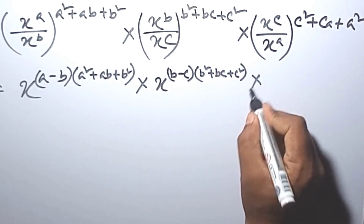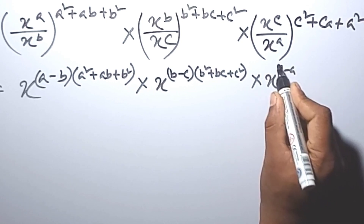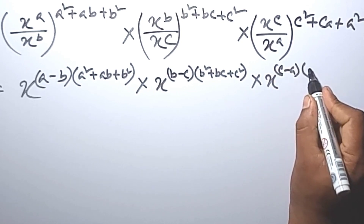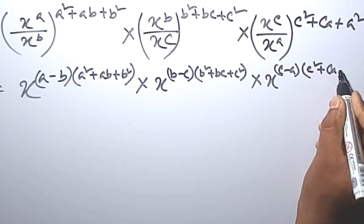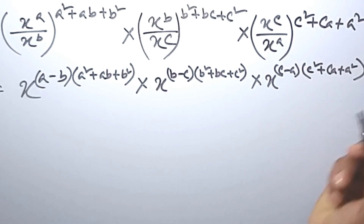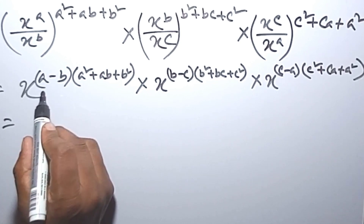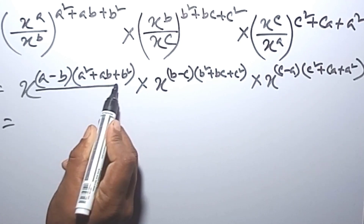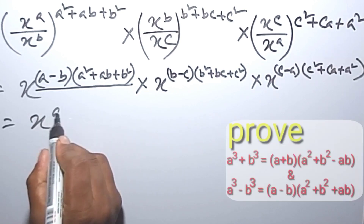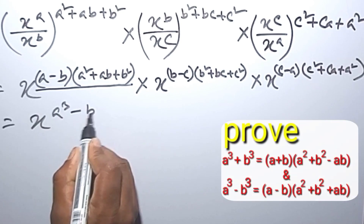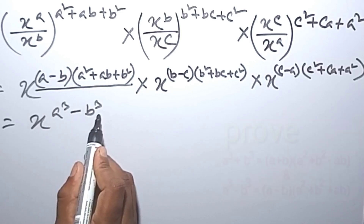Again, this we can write as x to the power of c minus a, multiplied by c squared plus ca plus a squared. Now this means a cubed minus b cubed.